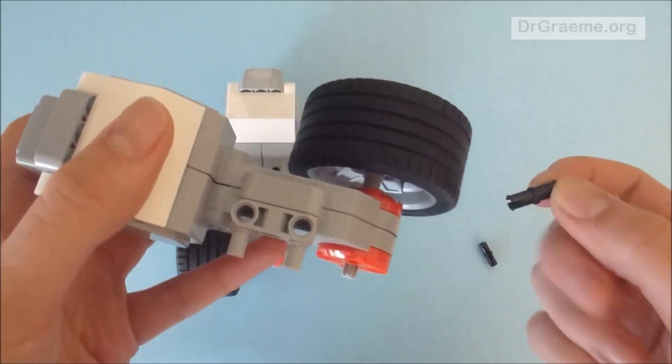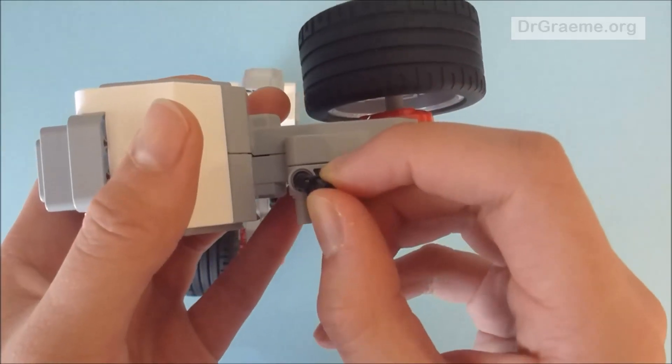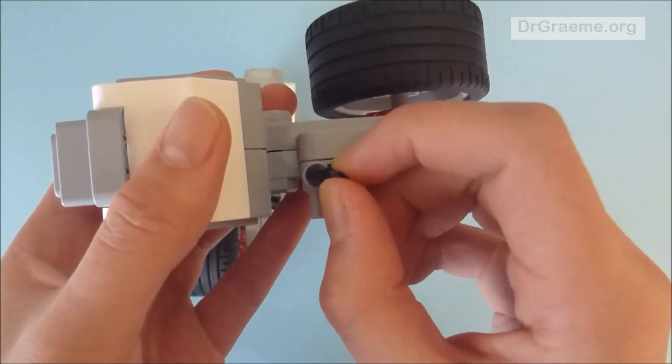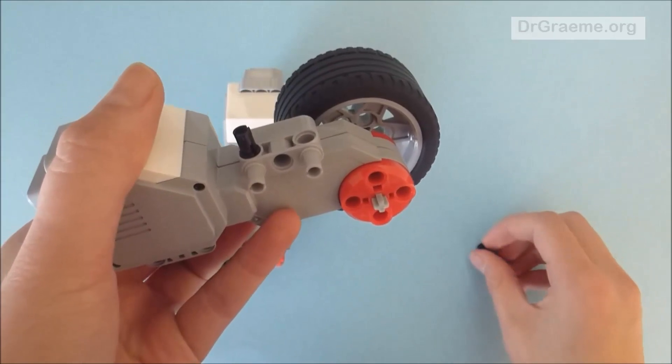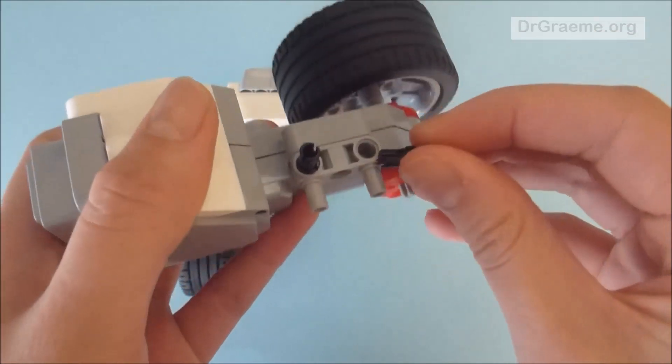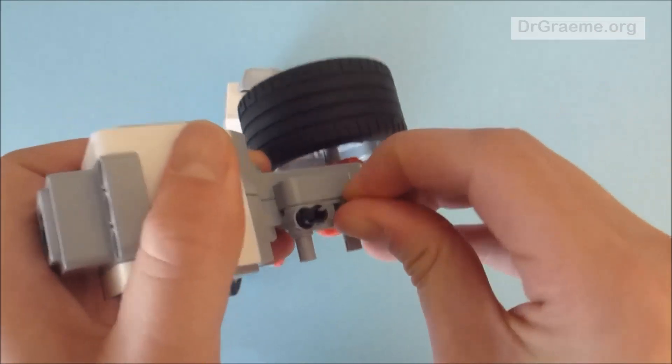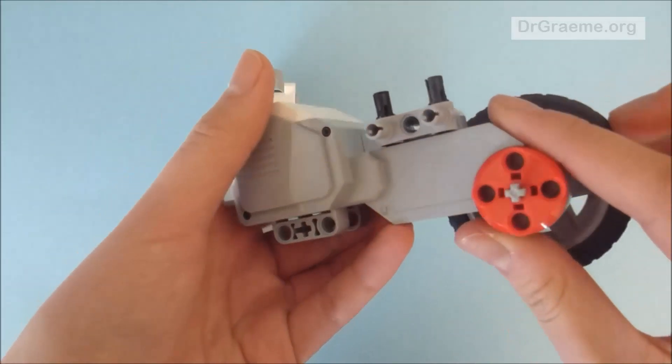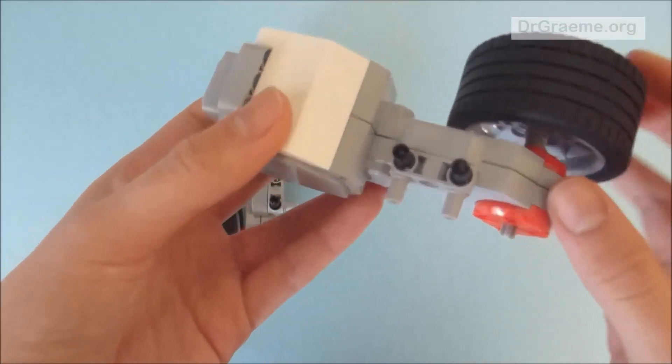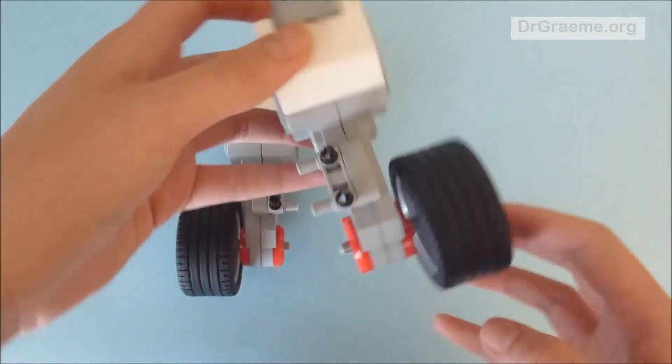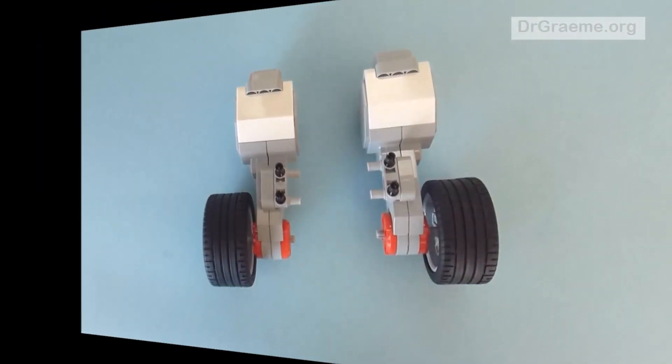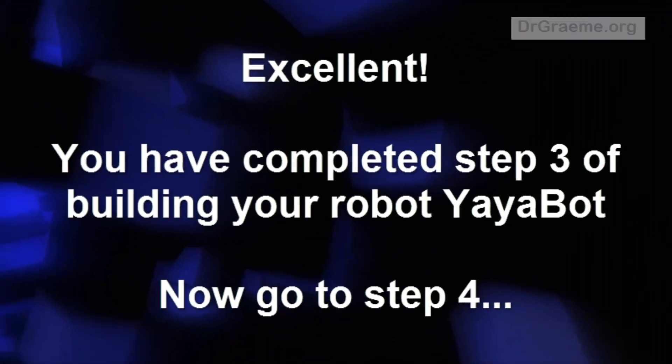Again, we're going to take one of the connecting rods and place it in one of the holes, then get the second one and place it in the other hole. And this is what it should look like.